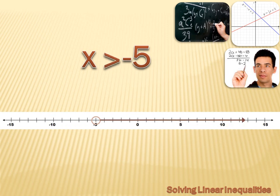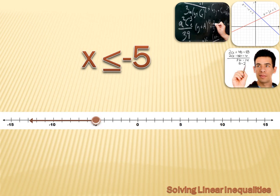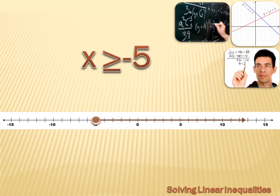What if it's x is greater than minus 5? Again, it's not greater than or equal to, so we use an open circle over minus 5, then draw an arrow going to the right towards the larger numbers. If it's x is less than or equal to minus 5, we fill in that circle, indicating minus 5 is included in the solution set. If the arrow pointed right with a filled circle, it would read x is greater than or equal to minus 5.